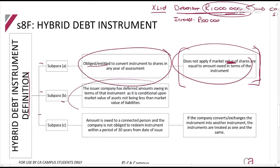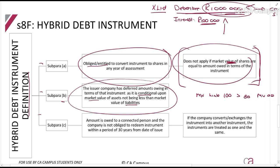Paragraph (b) applies where paying interest is conditional upon the market value of assets not being less than the market value of liabilities. For example, X Limited issues a debenture of R1 million and says it will pay R100,000 per year in interest, but if the market value of its liabilities — say R100 — exceeds the market value of its assets — say R80 — then it doesn't have to pay interest. In that case, this is a hybrid debt instrument.